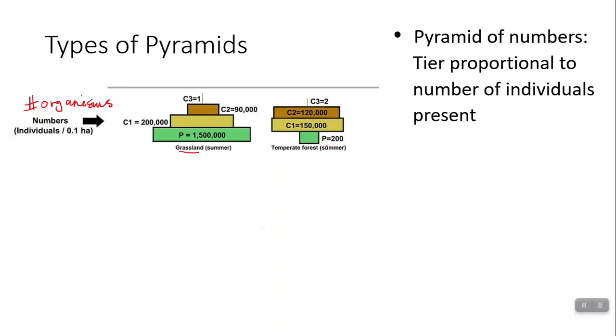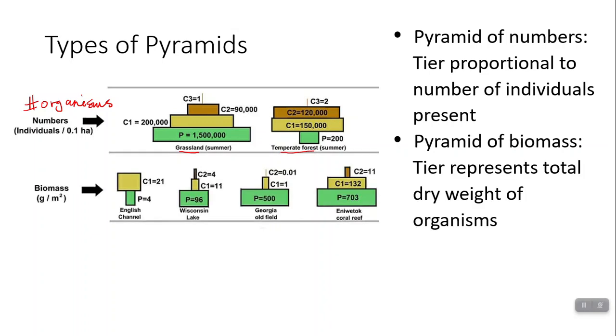There are some exceptions to that. So for example, we see here a pyramid of numbers for a temperate forest. The producers that are here are trees. Trees are very, very big. So each tree can support numerous primary consumers. So the base of this pyramid looks very small, but keep in mind, each tree is going to be able to support a lot of organisms.